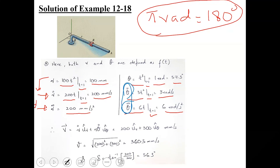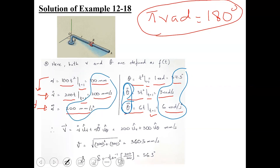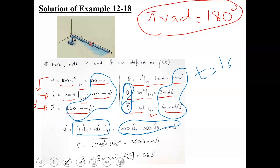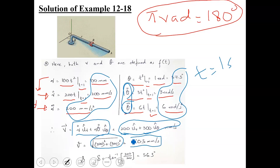All relevant values of r, r-dot, r-double-dot, theta, theta-dot, and theta-double-dot at t equal to one second are now determined. The velocity vector in cylindrical coordinates is v equals r-dot times ur plus r times theta-dot times u-theta. Substituting: r-dot is 200 and r times theta-dot is 100 times 3 equals 300, so the velocity vector is 200 ur plus 300 u-theta millimeters per second, with magnitude equal to the square root of 200 squared plus 300 squared, giving 360.5 millimeters per second.